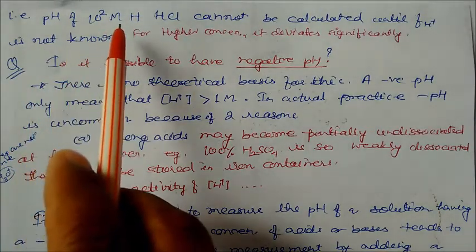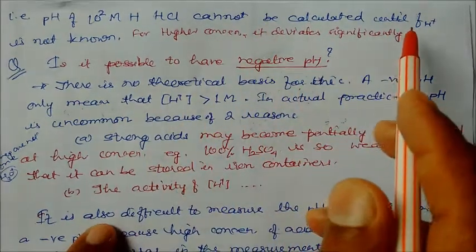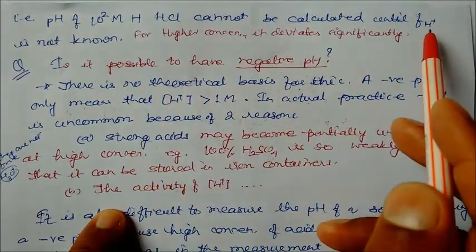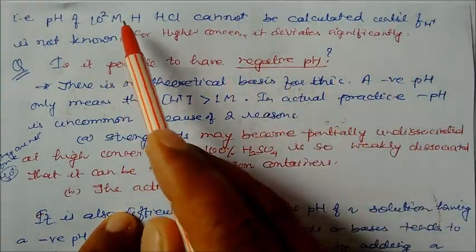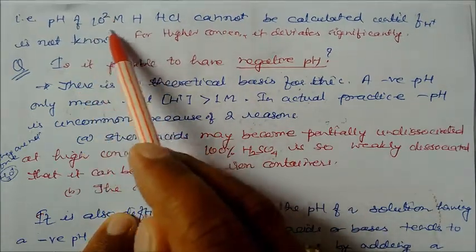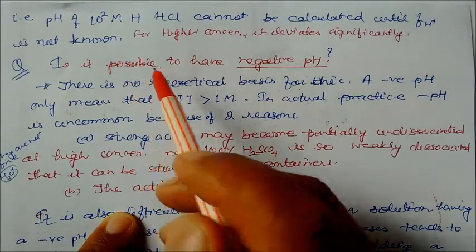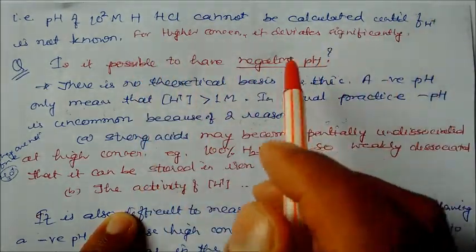For example, the pH of 10^-2 M HCl cannot be calculated until the activity coefficient is known. For higher concentration, it will give you different type of value significantly.